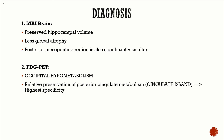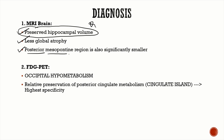For diagnosis: on MRI brain, patients have preserved hippocampal volume — an important exam question — with less significant global atrophy and involvement of the posterior mesopontine region.